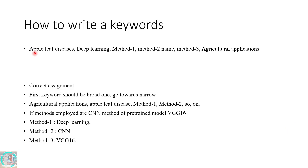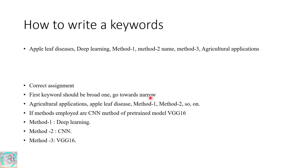The next step is how to assign the respective keywords. The first keyword should be a broader one. If the project is on leaf diseases, the broader term is agricultural applications - so the first keyword should be agricultural application. After the first keyword, you need to go narrower for your specific work. Within agricultural applications, you are concentrating on apple leaf disease detection, and then the methods you used.